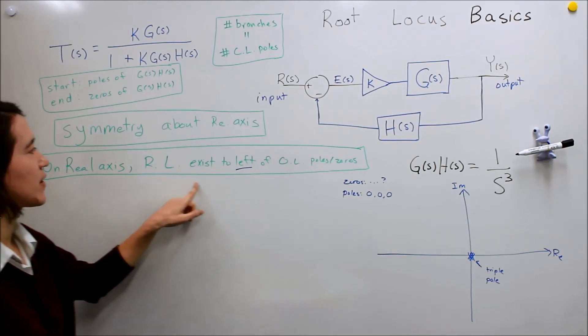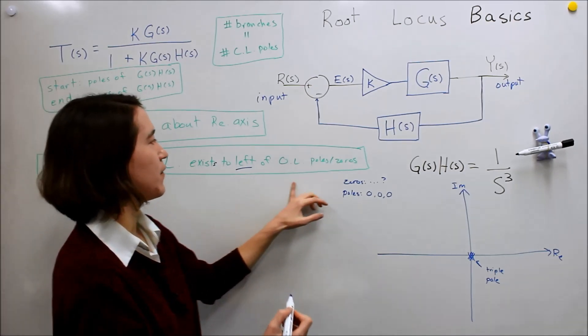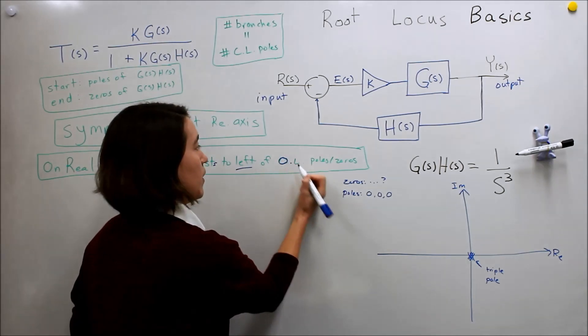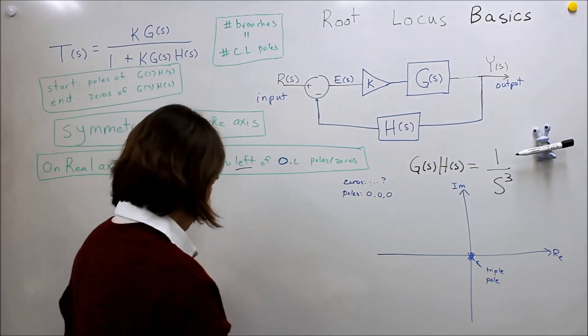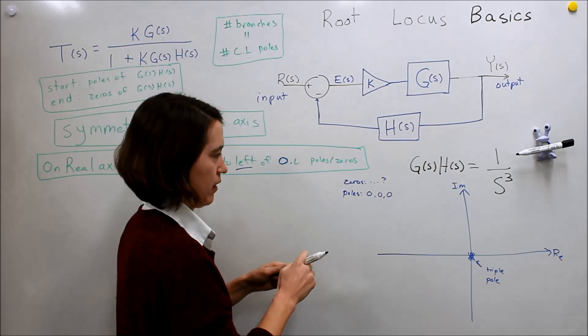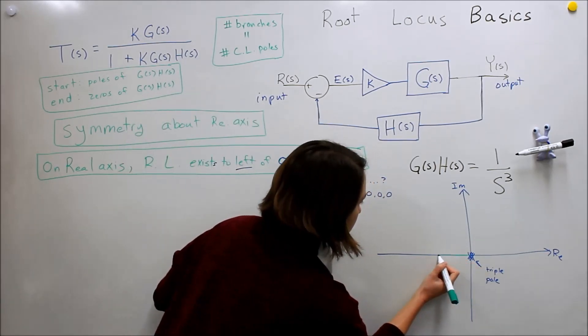Let's see if we can apply this. On the real axis, the root locus exists to the left - it should be an S - exists to the left of the open loop poles. This is OL, open loop poles and zeros. So here we have 1, 2, 3. That's an odd number. So we will have the root locus actually on this side. We will have something going here.